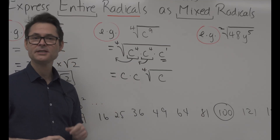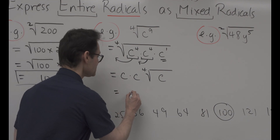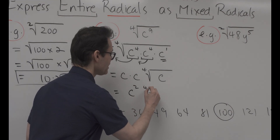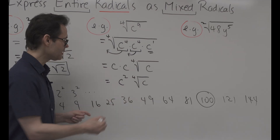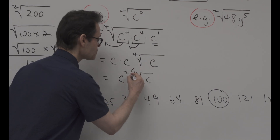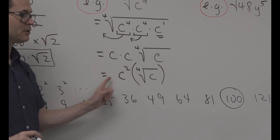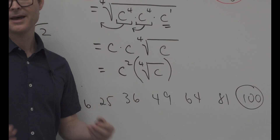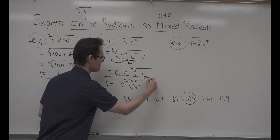C times C on the outside should be written as C squared, not left as C times C. So the answer is C squared times the fourth root of C. Put a bracket around the radical so the reader knows the 2 is an exponent on C and the 4 is the index on the radical — that's the final answer.